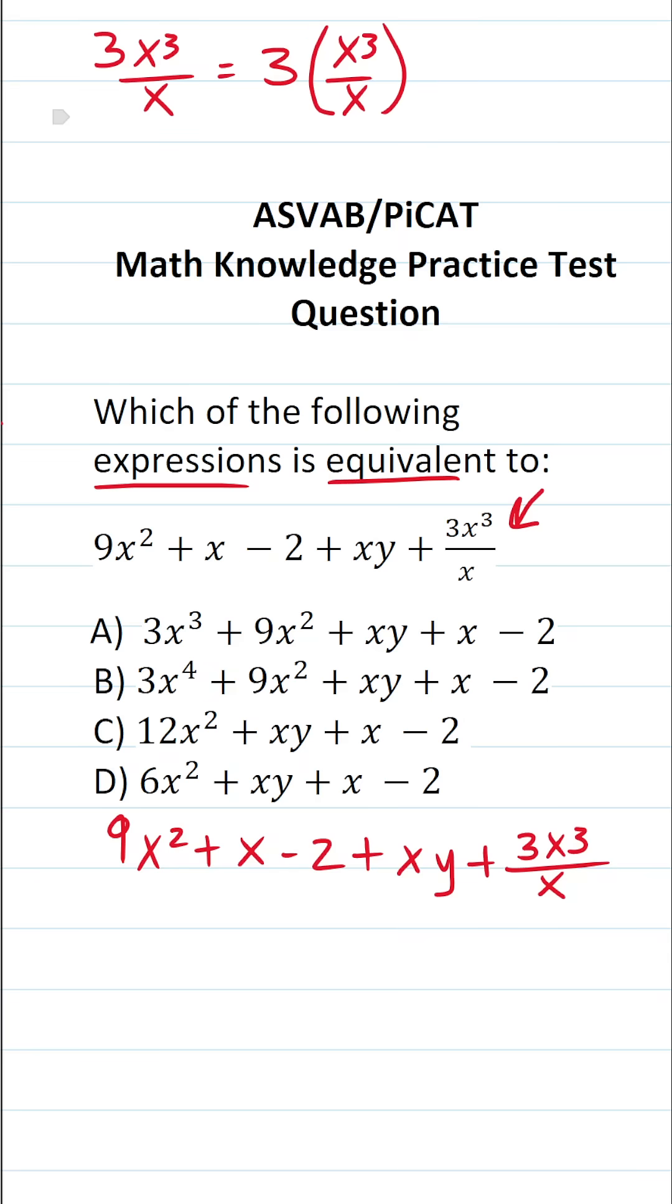The quotient rule says if you have a to the m over a to the n, that's equal to a to the m minus n. That is to say, you subtract our exponents.